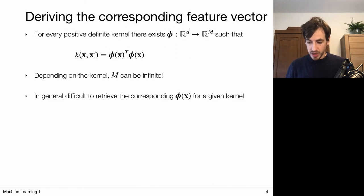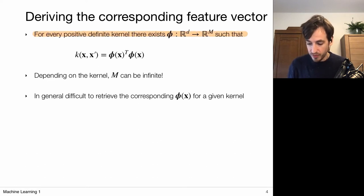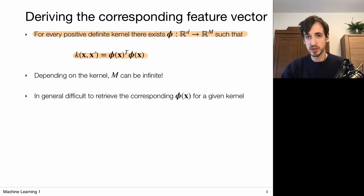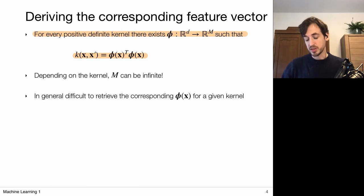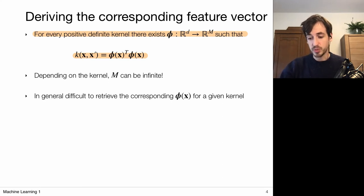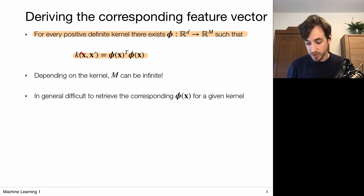There is a very important statement: for every positive definite kernel, there exists some phi vector that describes this kernel. So I can just define some kernel, show that it is positive definite, and this implies I'm implicitly working with some basis functions phi, which in principle can be infinite dimensional. This justifies the kernel trick completely — we can switch to the kernel viewpoint and solve our problems there, knowing that implicitly we're solving an original problem using feature vectors.